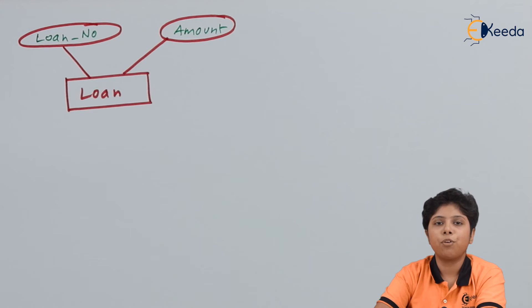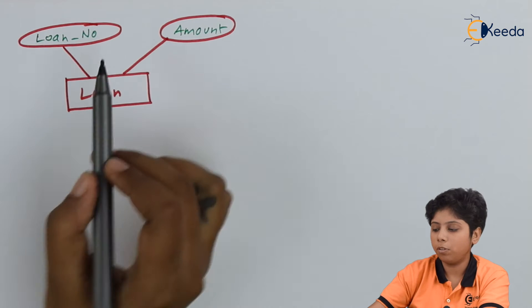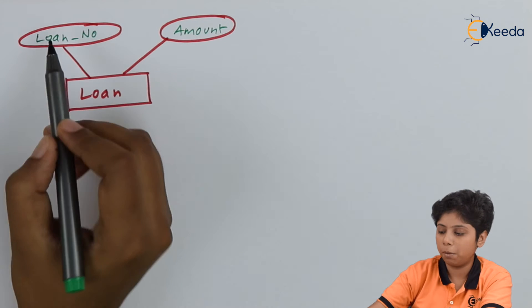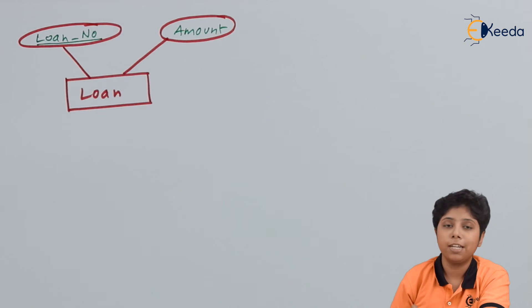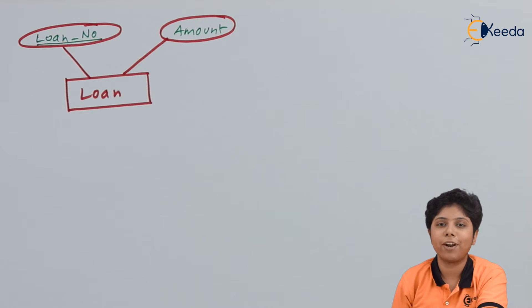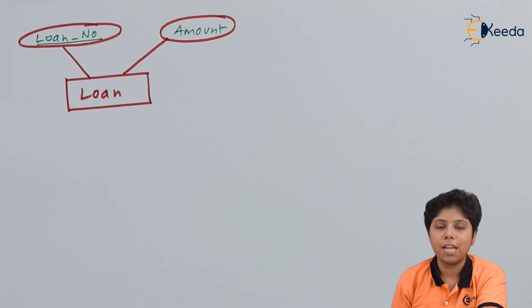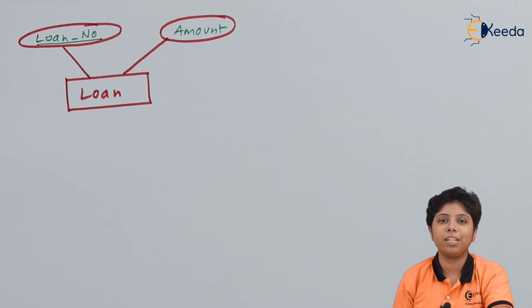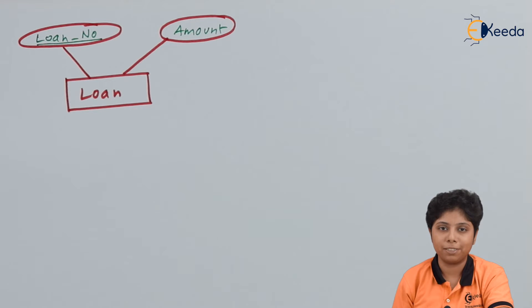For the loan entity, loan number and amount are the attributes, with loan number as the primary key. We can also introduce a weak entity set. Now we will describe the relationships that can be introduced in this database.